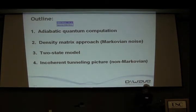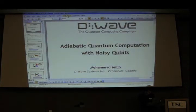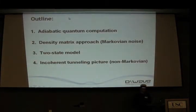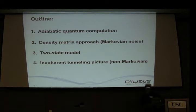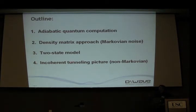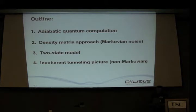I'm going to introduce quantum computation for open systems. I'm going to show you two approaches. One is based on the density matrix approach, which requires Markovian approximation. The other is a non-Markovian approach based on a series of incoherent tunneling between the two branches of potential. The last one requires a two-state model, which I will justify.